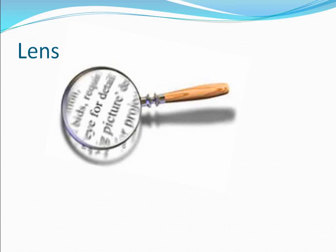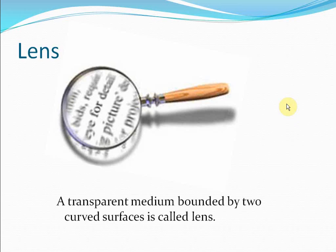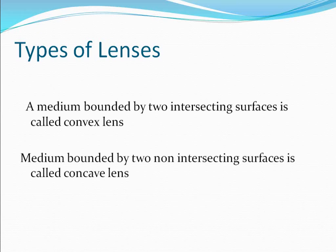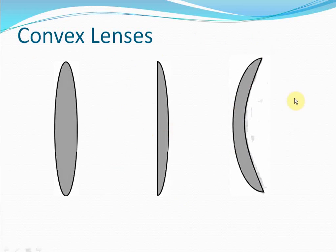So what essentially are lenses? A lens is any transparent medium bounded by two curved surfaces. If there are two spherical surfaces that are intersecting, that's a lens. There are two types of lenses: a medium bounded by two intersecting surfaces is called a convex lens, and a medium bounded by two non-intersecting surfaces is called a concave lens. All three lenses shown here are convex lenses.